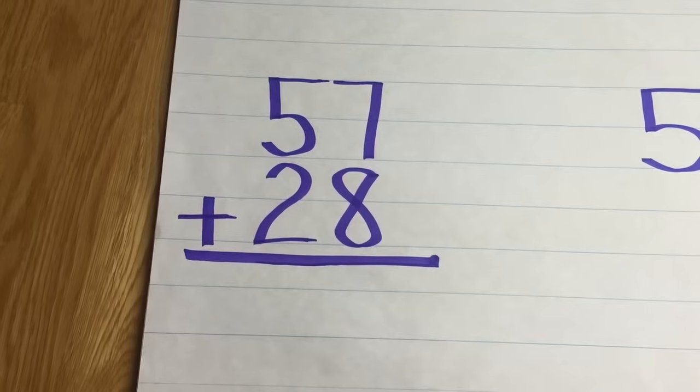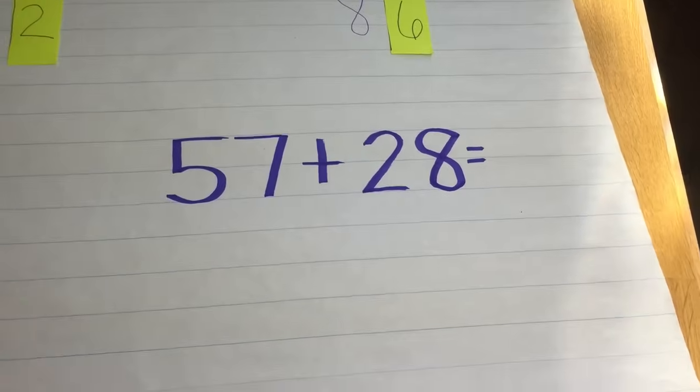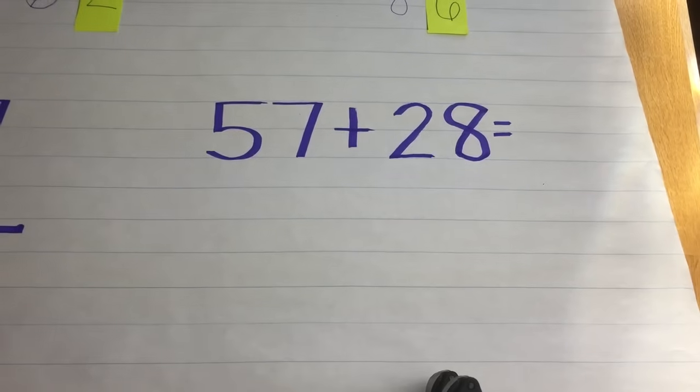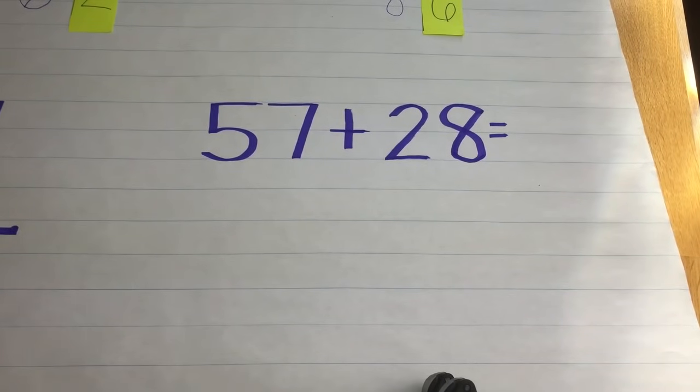So I'm going to take that standard addition problem and I'm going to move it to the horizontal way. From there, I'm going to take these numbers and I'm going to ask my kids how to break apart the 57.